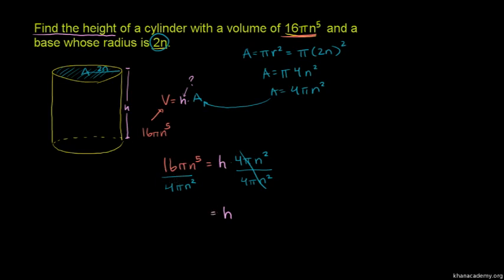We can simplify this a good bit. We have a π divided by a π, so those cancel out. We have a 16 divided by 4, that cancels out to a 4, divided by a 1, or just a 4.